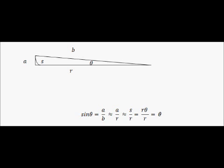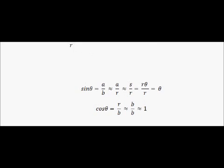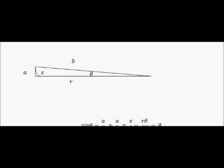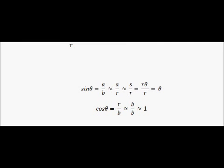With cos theta the logic is actually much simpler. All we've got is that cos theta is equal to r over b, basic trigonometry. We know that r and b are pretty much identical because theta is so small, so r over b is approximately b over b, which is of course 1. So cos theta is approximately equal to 1. There's a small notational mistake there, but that's the result.